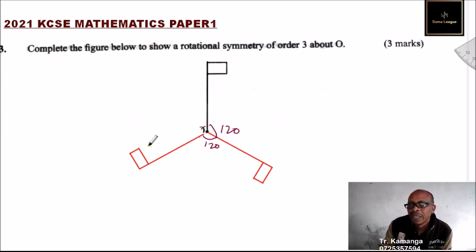This is the final image that you should get when you do it correctly using a ruler and compass. By doing that, you'll be able to get three marks. You learn rotational symmetry in form two, and this is what you are being tested in this question.